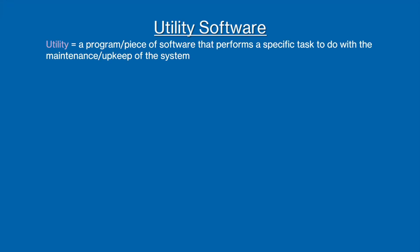All systems are equipped with different utilities — programs that perform specific tasks to do with the maintenance and upkeep of the system. Utilities include encryption software, defragmentation software, compression software, and many more, but we're just going to be focusing on those three today.